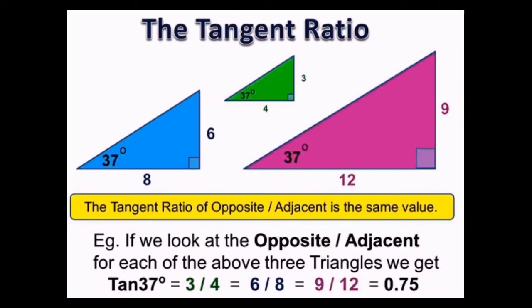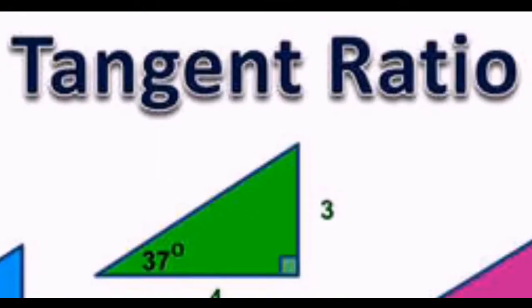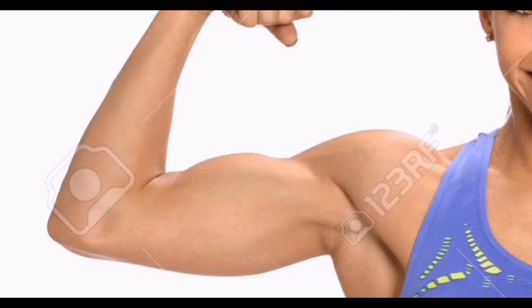We are now going to use the tangent ratio. Tangent ratio is opposite over adjacent. This is how it will go: tan 30 degrees equals x over 10. We're going to multiply it by 10. Now we have to release the big guns.